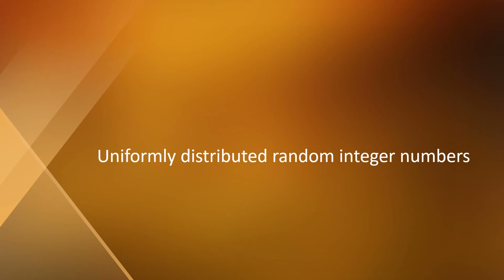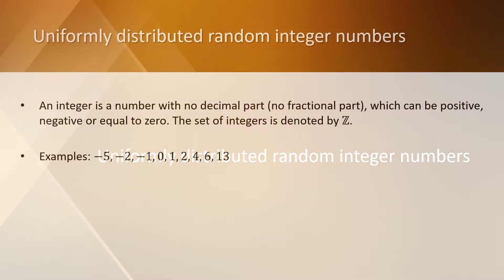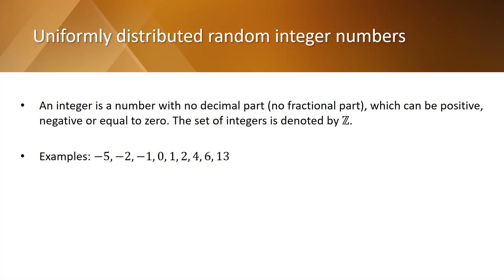First, let's see how to generate uniformly distributed random integer numbers. An integer is a number with no decimal part, which can be positive, negative, or equal to zero. The set of integers is denoted by Z. For example, minus five, minus one, zero, two, or six are integers.